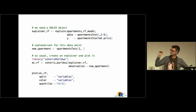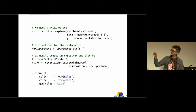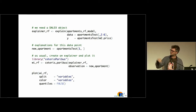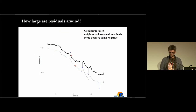In the DALEX package it's very simple. You just need to create a wrapper around your model — it works for any model, so it's totally model-agnostic. You use a function called explainer, here it's called the Ceteris Paribus function, and then there is a generic plot function that creates the plot.